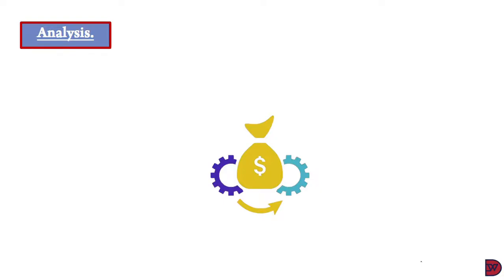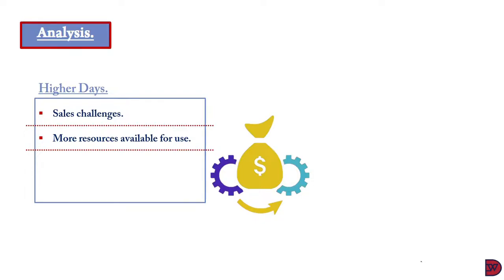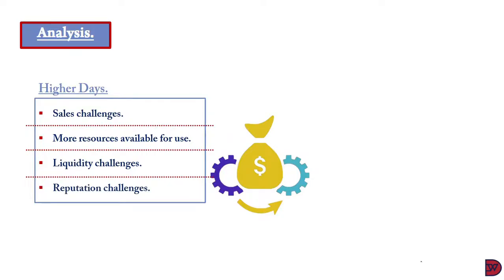When analyzing trade payable payment period, compare it to prior years, industry standards, or a chosen competitor. If yours is higher, it may indicate sales challenges — the business is unable to convert inventories into cash to settle payables on time. It also means resources are available for longer use, potentially for profit generation. Additionally, it may signal liquidity challenges, and a longer settlement period can damage the business's reputation and risk credit arrangements being withdrawn.